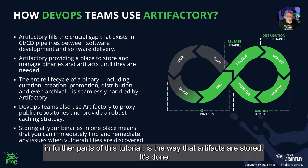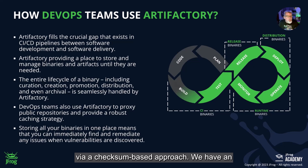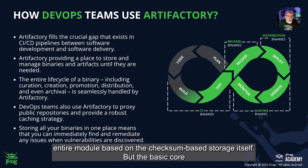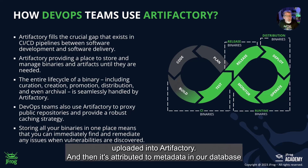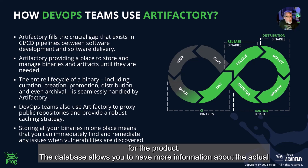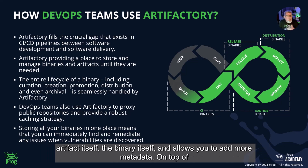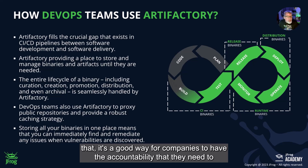Artifacts are stored using a checksum-based approach — specifically a SHA-256 value that represents the actual binary uploaded into Artifactory. That value is then attributed to metadata in our database for the product. The database allows you to have more information about the actual artifact and binary itself, and you can add more metadata on top of that.